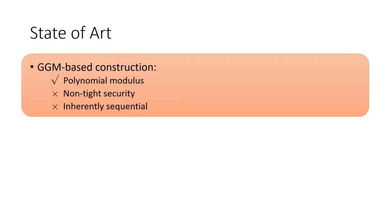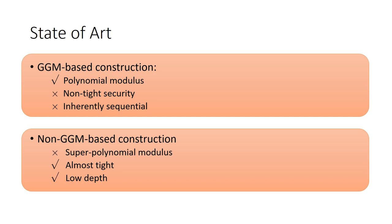Now, the state-of-art is that, on the one hand, GGM-based construction has polynomial modulus, but is non-tight security and inherently sequential. On the other hand, non-GGM-based construction is almost tight and has low depth circuit, but its modulus is super-polynomial. For Tsabary's work, it has polynomial modulus almost tight, but its circuit is just included in NC2. Therefore, we see it does not have perfect low depth.